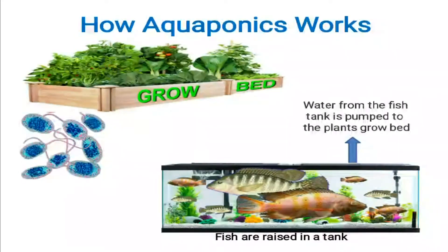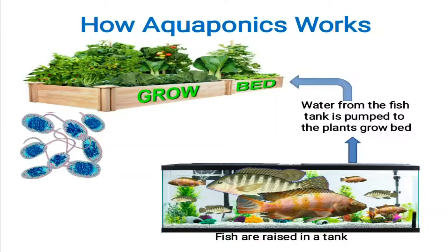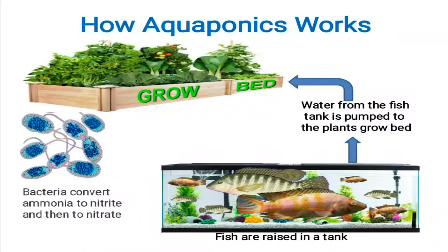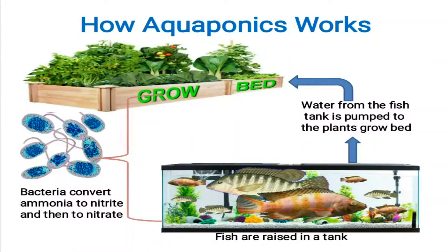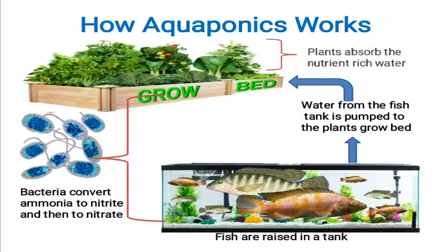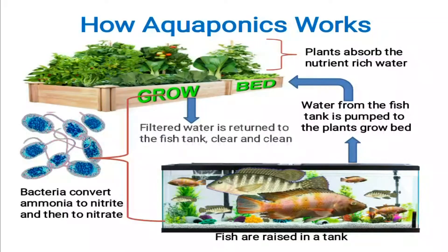Ganito lang guys: yung tubig sa fish tank ay dinadala o binubumba patungo sa grow bed. Yung mga dumi ay kinaconvert ng bacteria — yung dumi sa fish tank at yung dumi na nadala sa grow bed ay kinaconvert ng bacteria. Ang tawag doon ay ammonia, kinaconvert ito ng nitrite, and then kinaconvert ito ng nitrate. Alam natin ang nitrate ay pataba ng mga halaman, so inabsorb ito ng mga halaman.